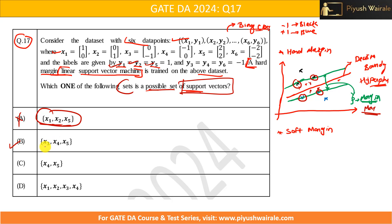Option B has x3, x4, and x5. Here x3 and x4 are negative class and x5 is positive class. This gives two negative class points and only one positive class point. Similar to option A, there are not enough positive class points to define a separating hyperplane, so option B is also not correct.